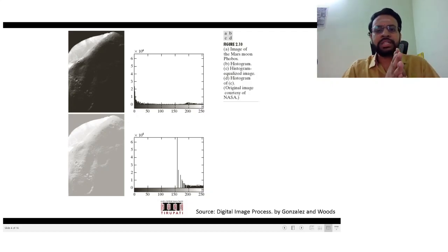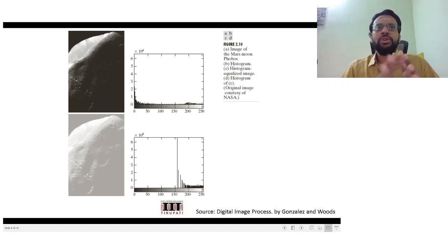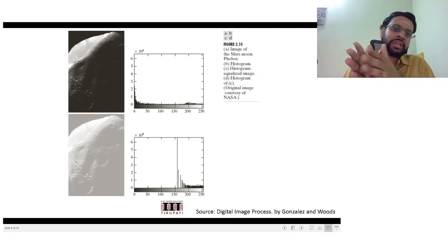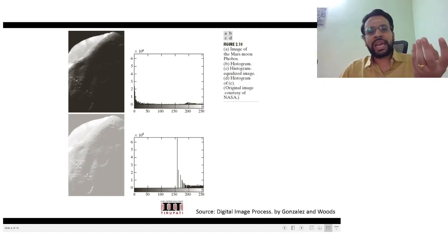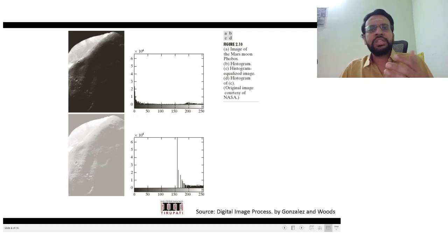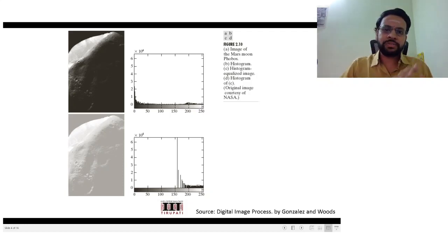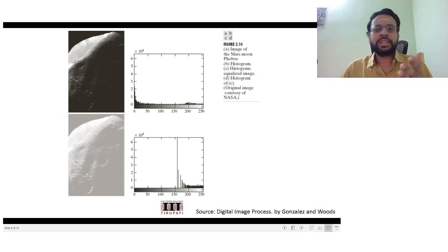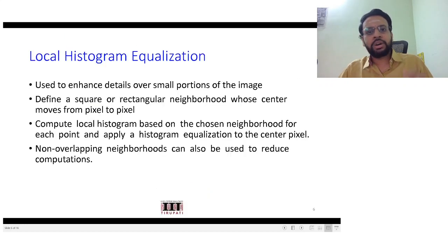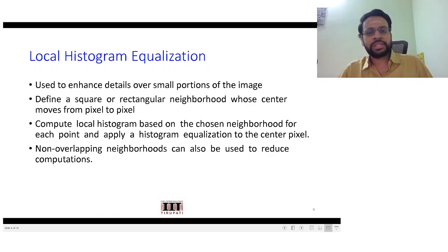Now let's discuss two more methods. The first is local histogram equalization. In practice there could be many instances where you would like to apply histogram equalization over a given region rather than the entire image, because that will not capture the characteristics of that particular region. In other instances the shading or illumination could be varying over different parts of the image, so using just a single histogram for the entire image might not give you the best results.